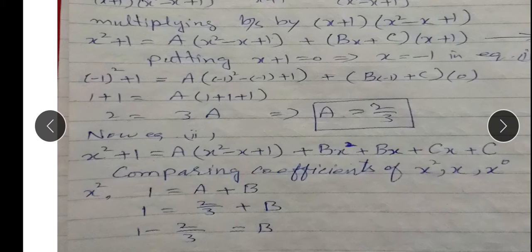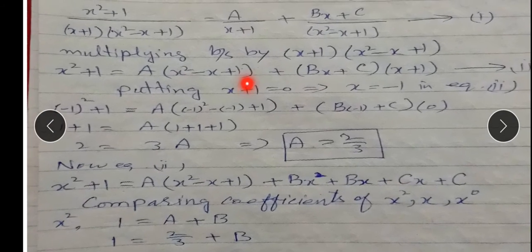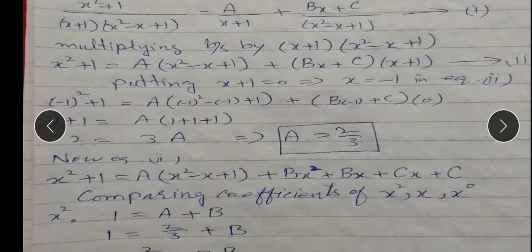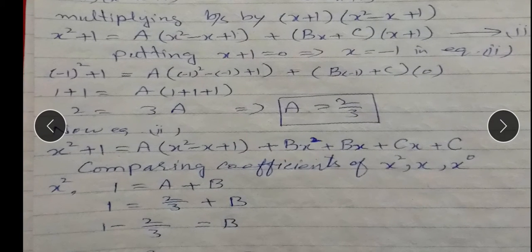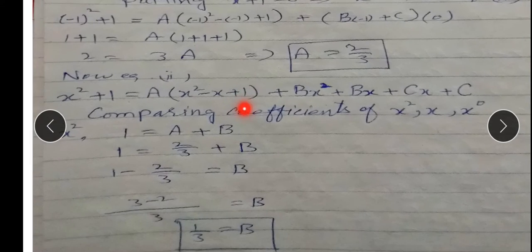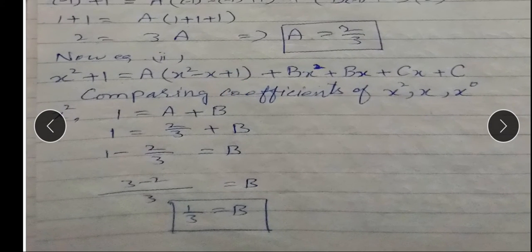Equation 2 simplify karte hain: x²+1 = A(x²-x+1) + (Bx+C)(x+1). Expand: Ax², -Ax, A, Bx², Bx, Cx, C. Comparing x² coefficients: 1 = A + B. A = 2/3 put kiya: 1 - 2/3 = B, so 3/3 - 2/3 = 1/3, therefore B = 1/3.